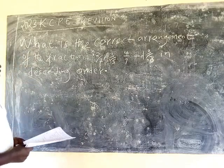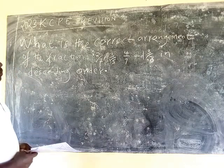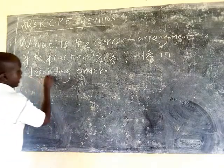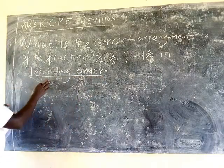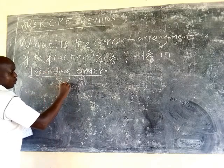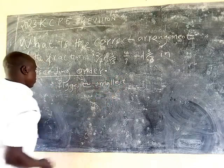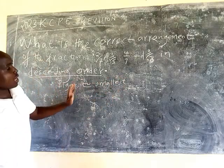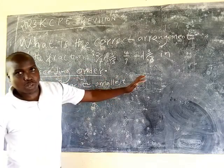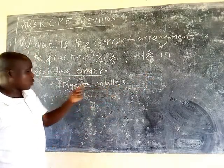What is the correct arrangement of the fractions 2/7, 3/5, 4/7, and 3/8 in descending order? The keyword here is 'descending.' Descending means from the biggest to the smallest. So we want to start with the biggest fraction and go down to the smallest — that is called descending order. Ascending is the opposite: from smallest to the biggest.